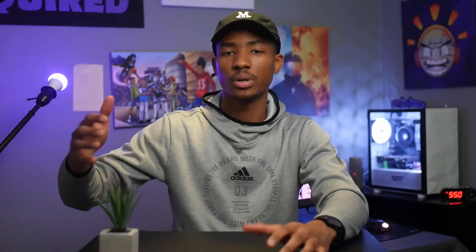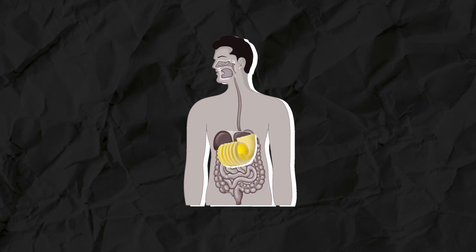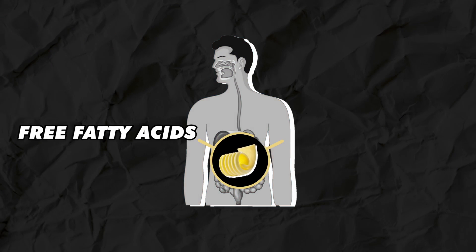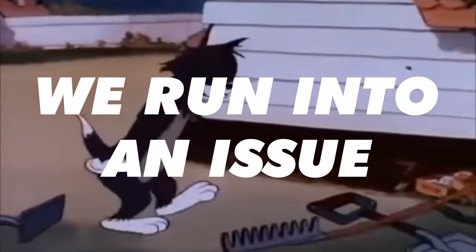I grew up in a neighborhood with a high percentage of black people, so we can refer to that neighborhood as a black neighborhood. But of course, there are some other races as well — not really. So this butter gets down in our digestive system and we begin to break it up. We get some cholesterol, some free fatty acids, which are basic units of fat — but we run into a bit of an issue.